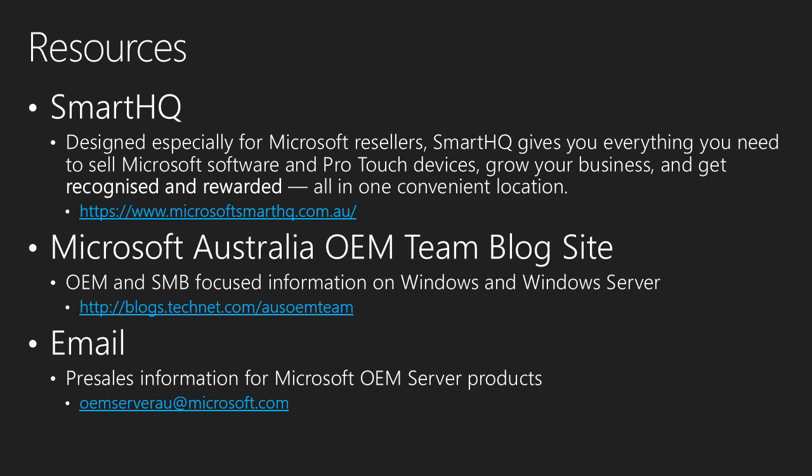Now moving on to the final slide — the three main resources that we like to promote from the local OEM team. The prime one is the Smart HQ site, which covers sales, marketing and technical information. It will cover different programs and different offers that the DISTIs and the OEMs have got in place, and it's really designed to be this all-in-one location so you can go there and see what's happening. There's a lot of information and it gets updated on a very regular basis.